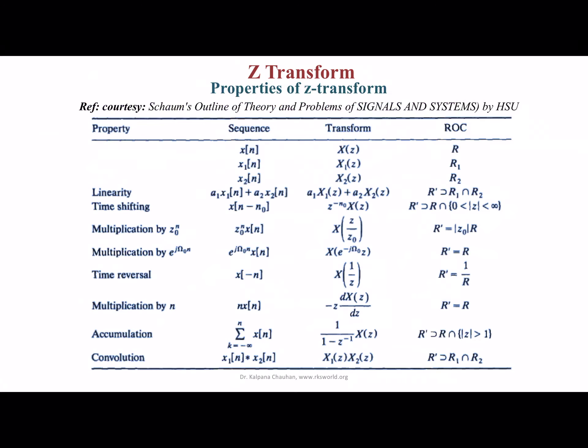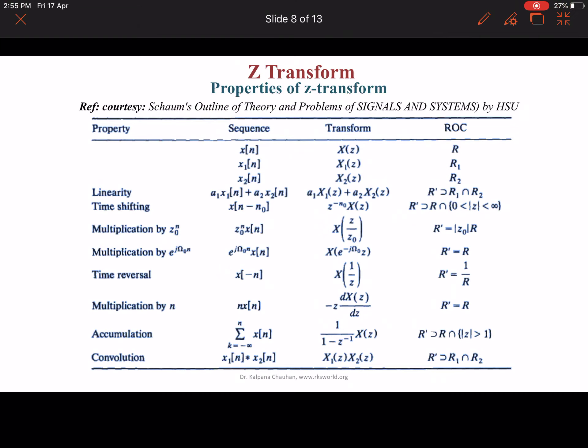Here are some properties of Z-transform. For this purpose, we have given a sequence X(n) with Z-transform X(z) and ROC R; X₁(n) with Z-transform X₁(z) and ROC R₁; and X₂(n) with Z-transform X₂(z) and ROC R₂. Let's see these properties one by one. First, linearity: if the system is linear, it is also linear in the case of Z-transform, and the region of convergence is the intersection of the ROCs of the two signals.